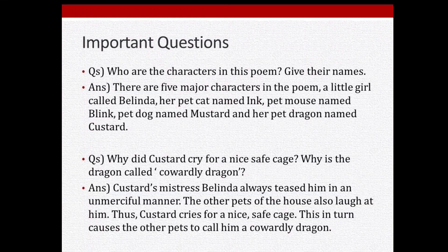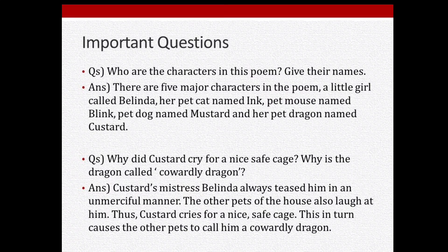Question two: Why did Custard cry for a nice safe cage? Why is the dragon called a cowardly dragon? Answer: Custard's mistress Belinda always teased him in an unmerciful manner, and the other pets also laughed at him. Thus Custard cried for a nice safe cage, which in turn caused the other pets to call him a cowardly dragon.